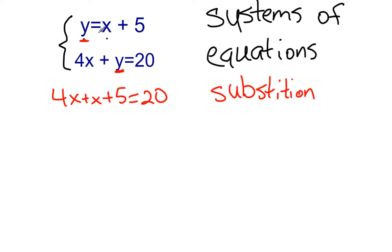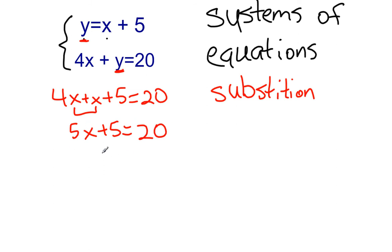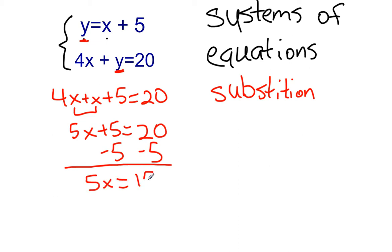The reason we do this is that one equation with two variables is impossible to solve — you can only solve for one variable per equation. But when we substitute Y with X plus 5, our new equation only has X's. We combine like terms: 4X plus X is 5X, so 5X plus 5 equals 20. We subtract 5 from both sides to get 5X equals 15, then divide by 5.